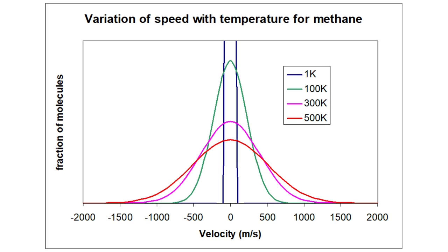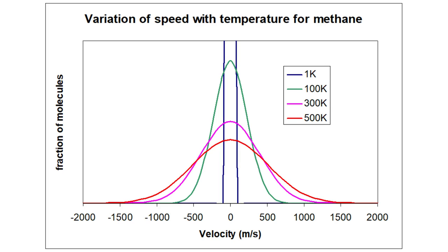For example, here's the velocity distribution from methane molecules at a variety of temperatures. Notice that, at the highest temperature, the distribution has the greatest width. This makes sense, because at higher temperatures, the molecules should be capable of moving at higher velocities, so there's a greater probability that the molecules will have high speeds in the positive or negative x-directions.